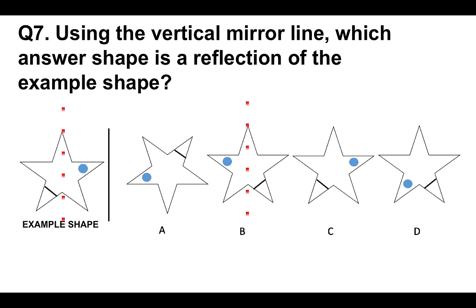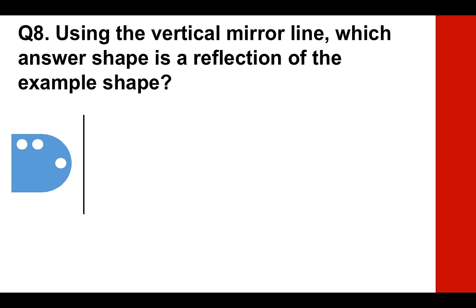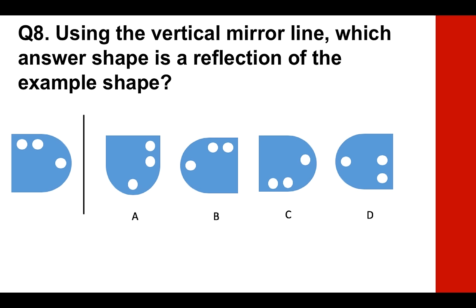I'd like you to have a go at this type of question now. Please put your answer to question eight in the comments section below the video. Using the vertical mirror line, which answer shape is a reflection of the example shape? There we go — is it A, B, C or D? On the left is the example shape. Here's the timer.